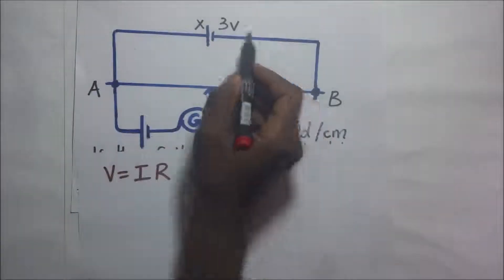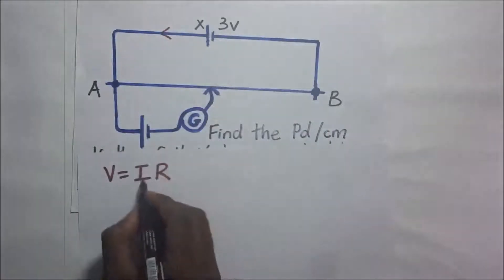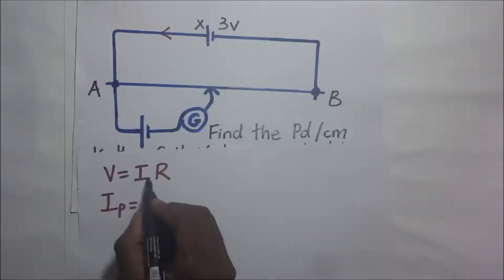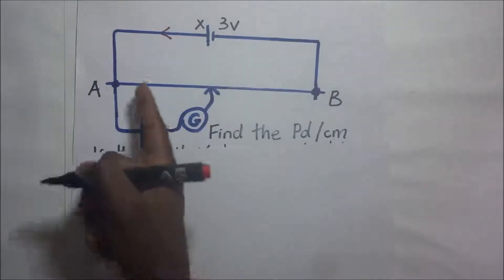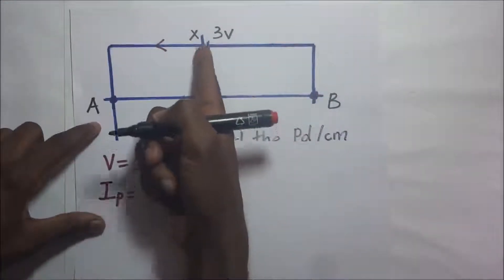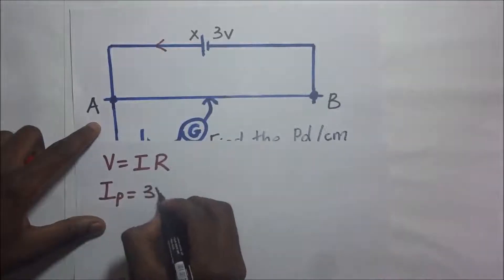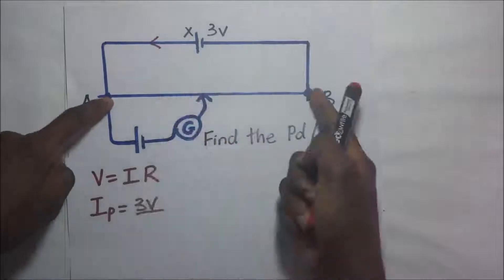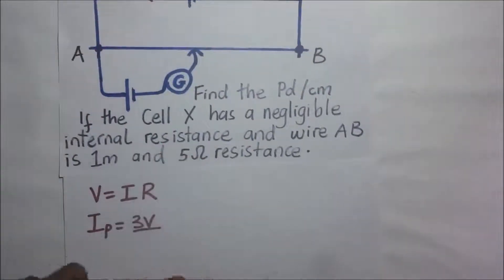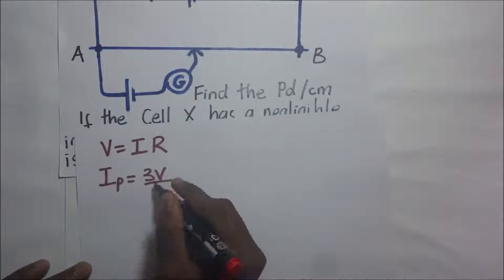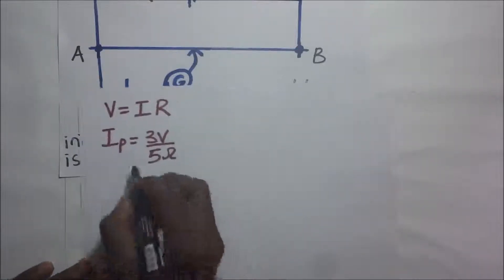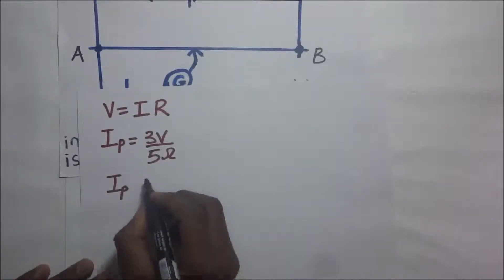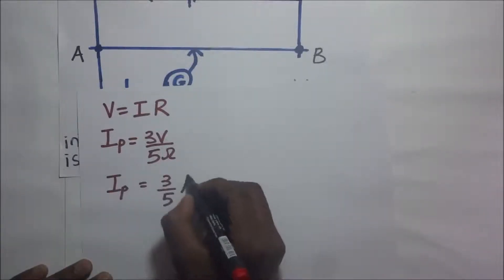We need to first find the current flowing through the primary circuit. The current flowing through the primary circuit, IP, is going to be equal to V over R — the potential difference in the entire primary circuit, which is 3V, divided by the effective resistance in the whole circuit. In the whole circuit we only have wire AB, and the resistance of AB is five ohms. So this is 3 over 5, meaning the current in the primary circuit, IP, is equal to 3/5 amperes.